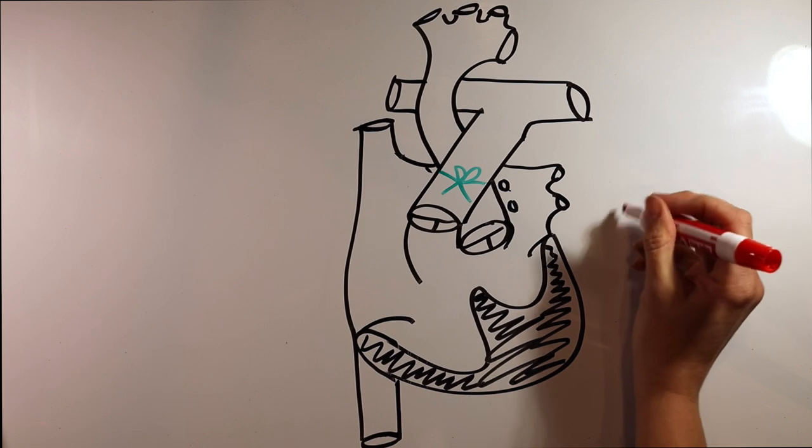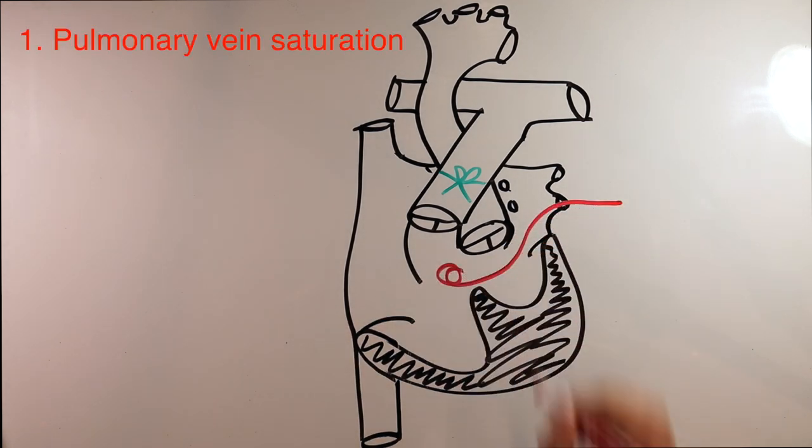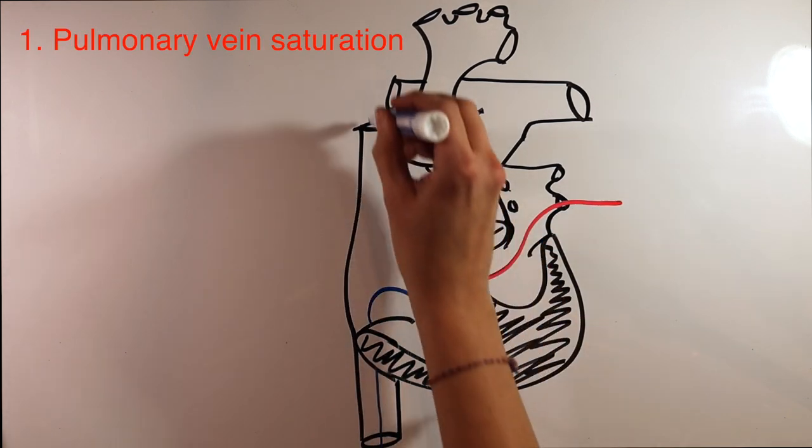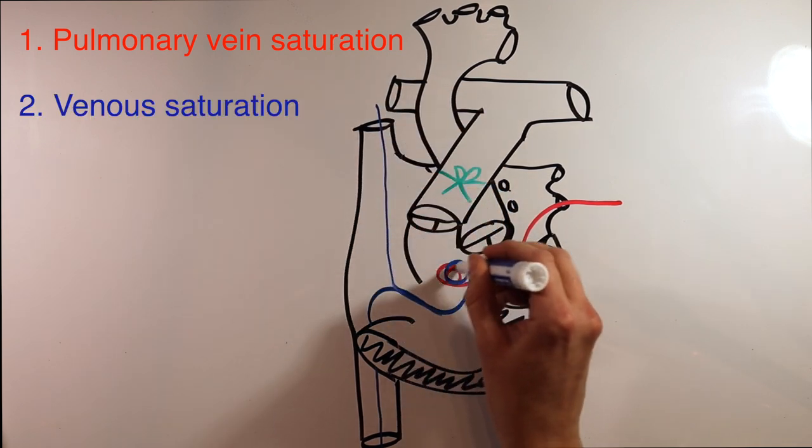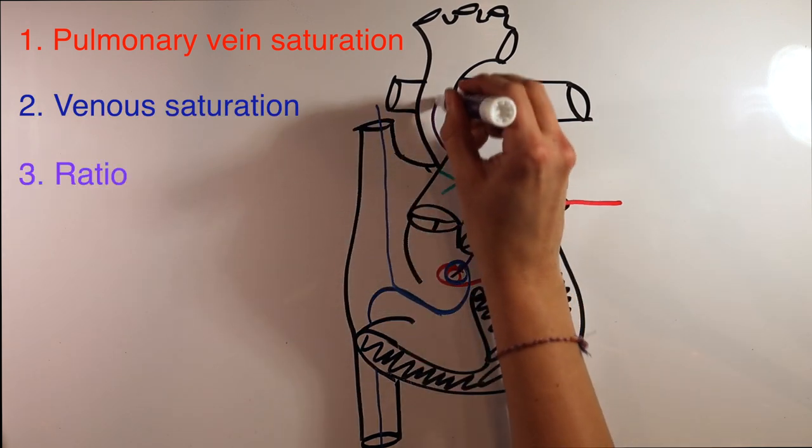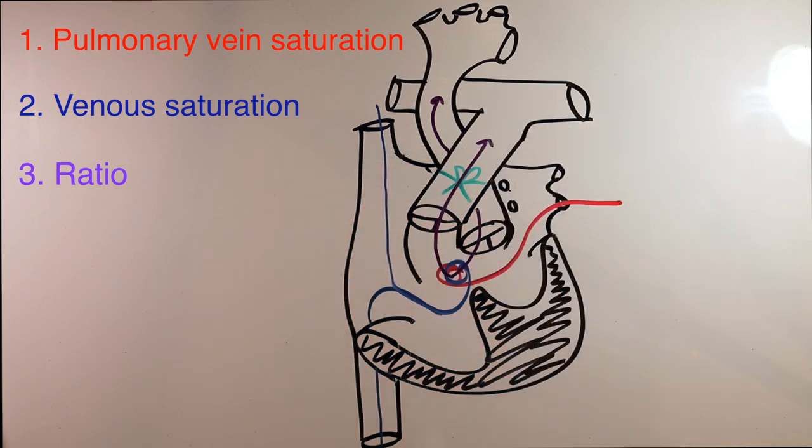Number one, the saturation of the red blood coming back to the heart from the lungs. Number two, the saturation of the blue blood coming back to the heart from the body. Number three, the ratio of number one and number two going out to the body. That's it. And if your blue baby is too blue, it's a problem with one of these three things.